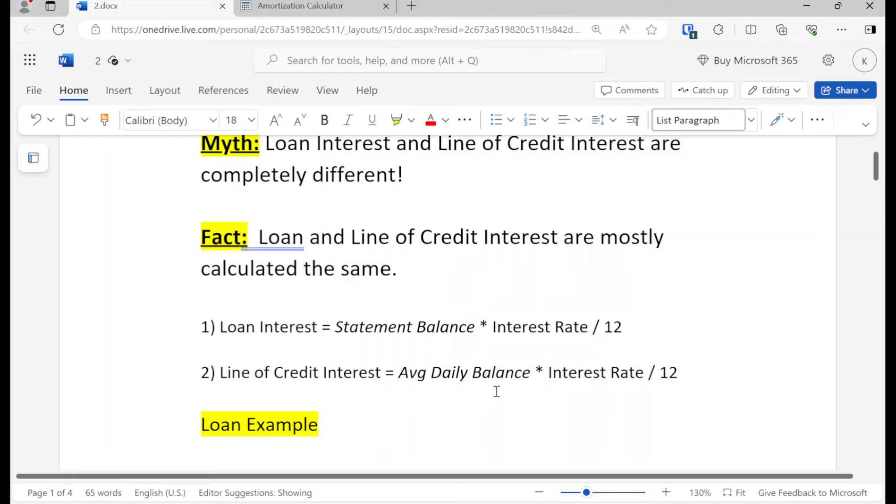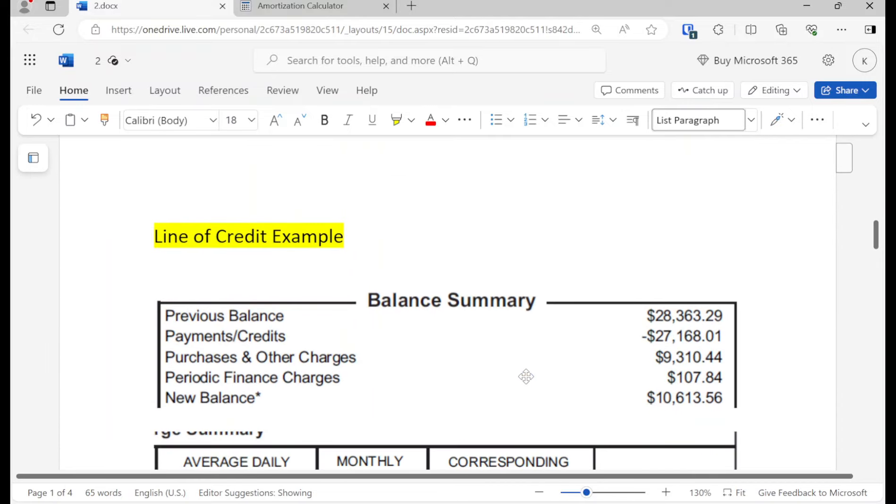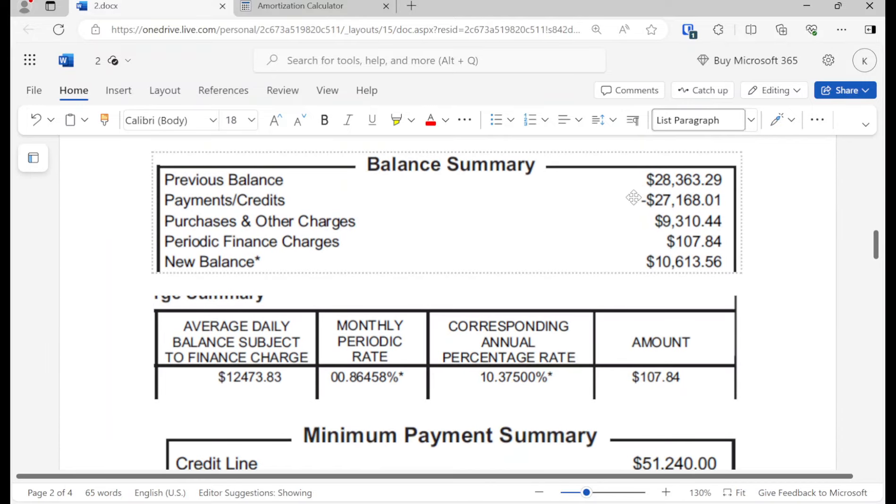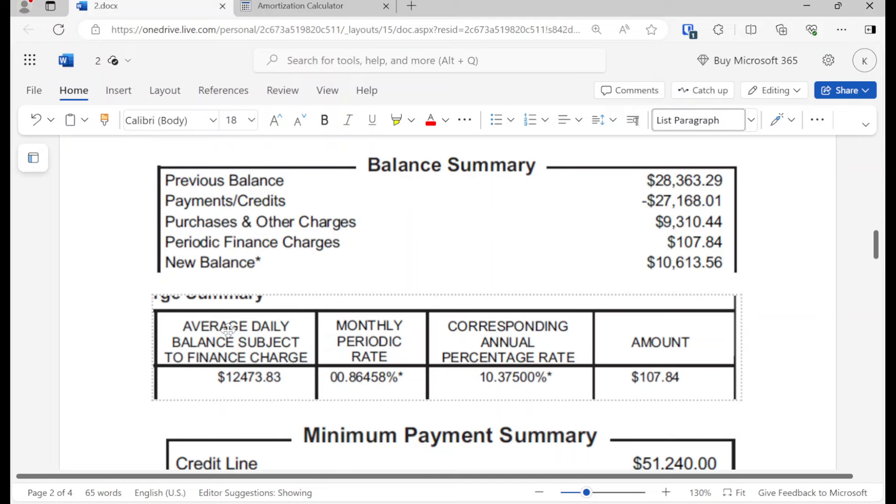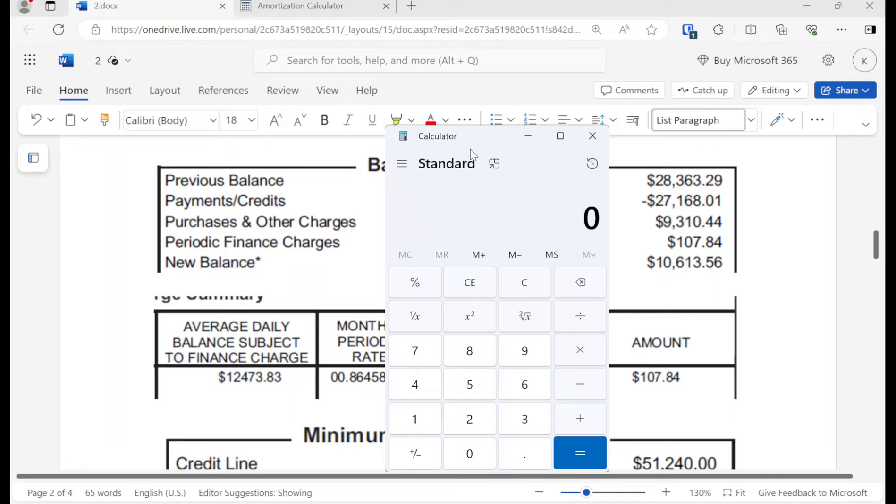Now line of credit, because it's revolving, they have the average daily balance. And what they do is that at the end of every day, they know what the balance is. They add them all up for every single day and then divide it by the number of days in the month. So here we have an example of a line of credit. Again, I'm practicing velocity banking here where I put the entire payment into the line of credit, take out expenses, and then we have a periodic finance charge. And so you have a new balance here about 10 grand, even though we started off 28 grand on the previous month. And then you could see here the average daily balance, the monthly rate, and then the annual rate, and then the actual amount that was charged.